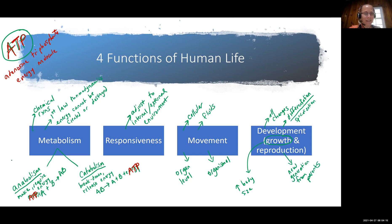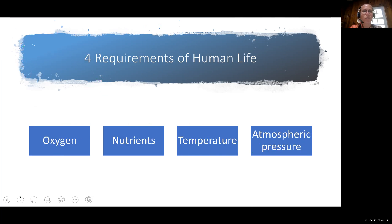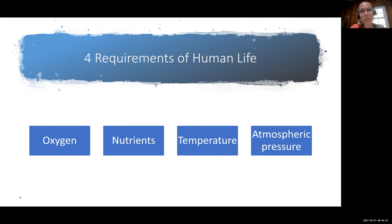As we continue, we have what we can think of as four requirements of human life — the things we really need for living. We need oxygen, we need nutrients, we need a certain range of body temperature, and we also need a certain range of atmospheric pressure.